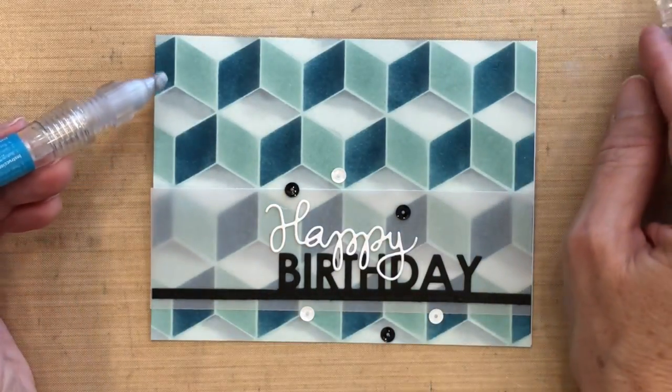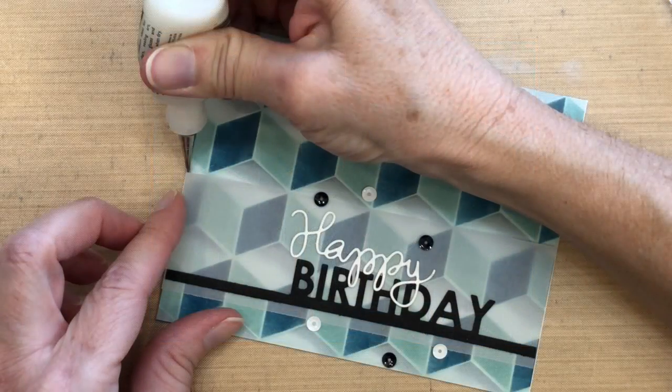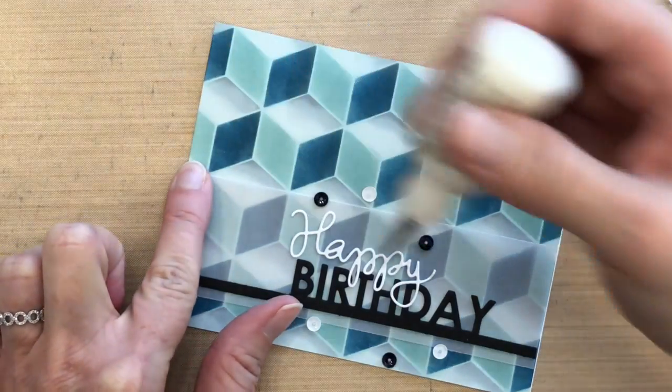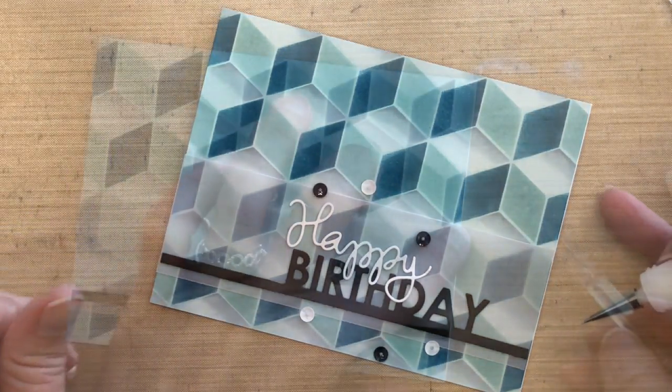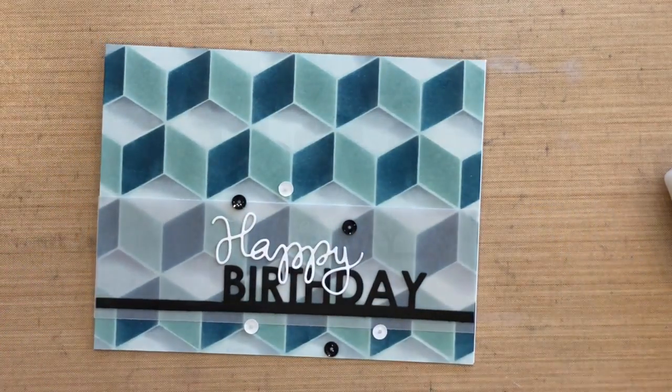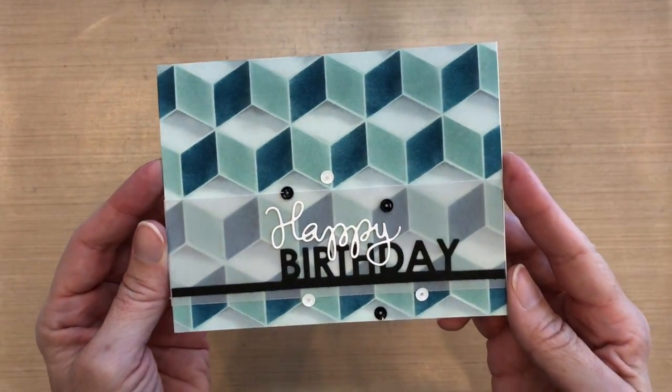I always place all my sequins first, and then I use my pick-me-up stick and some multi-medium matte to adhere them to the card. The top corners of my vellum started coming up a little bit, so I felt like I needed something under there. So I just squirted a tiny little dot of the multi-medium matte and pressed it down, and I don't think you would really notice it, but it totally held it in place. I didn't have to worry about it.